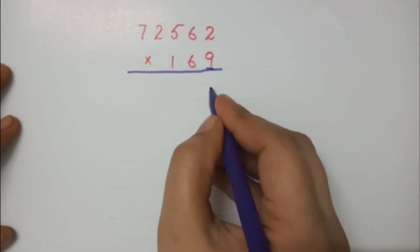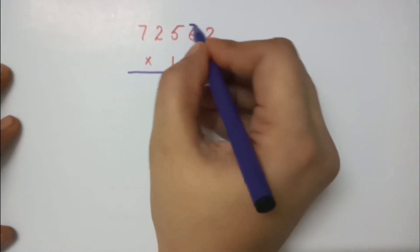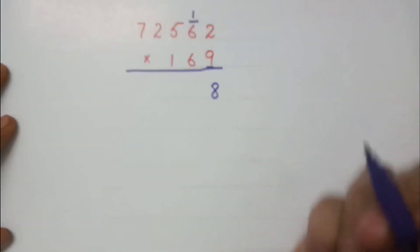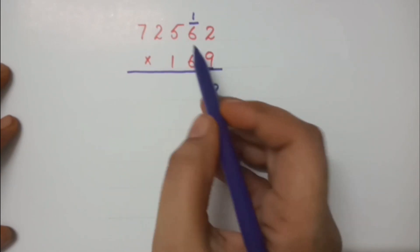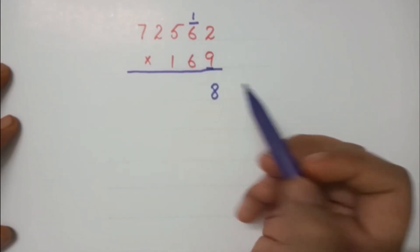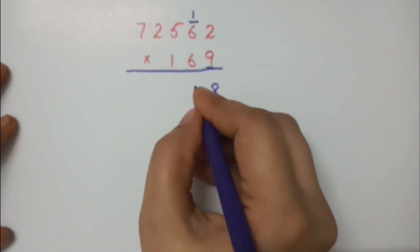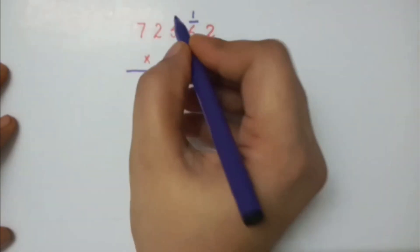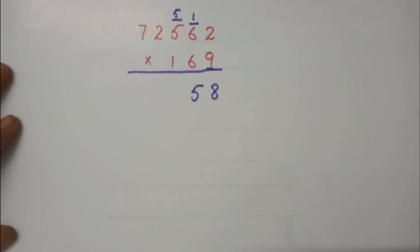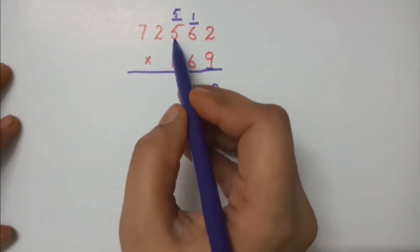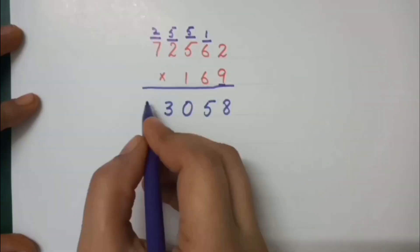9 twos are 18 — write 8 here and carry 1. The second digit is 6, so multiply 9 by 6: 9 sixes are 54, plus 1 carry is 55 — write 5 and carry 5. The next digit is 5 again, so 9 fives are 45.